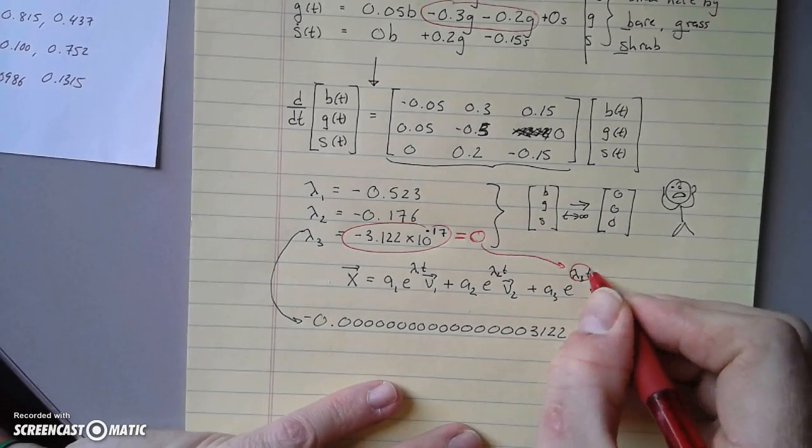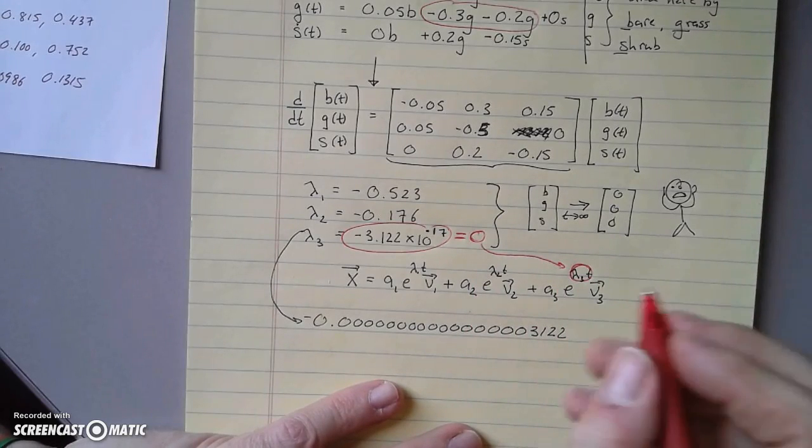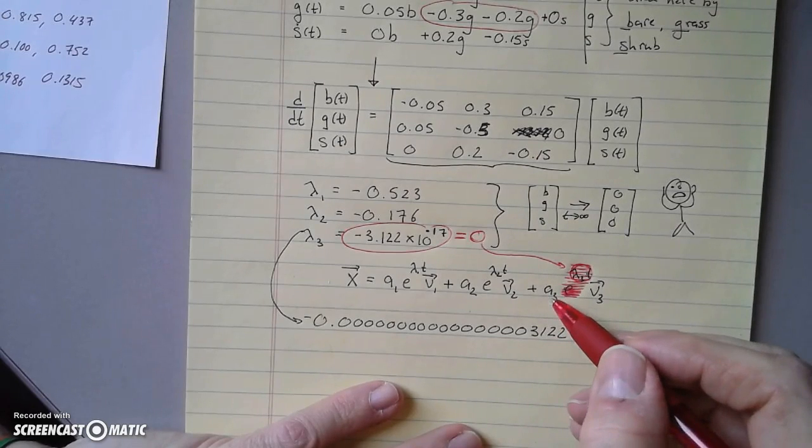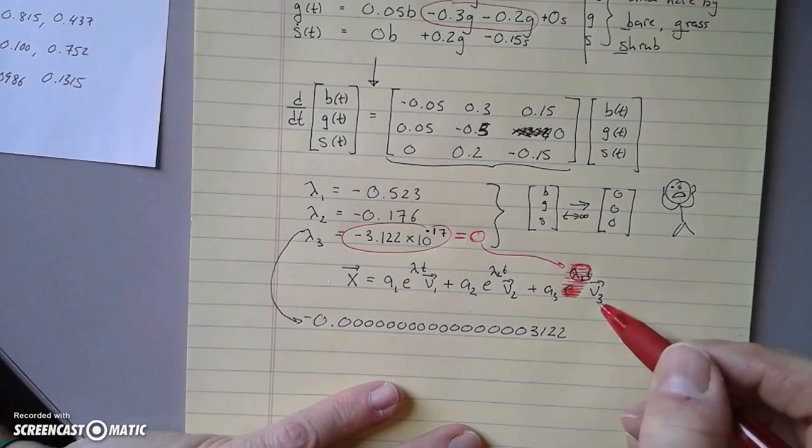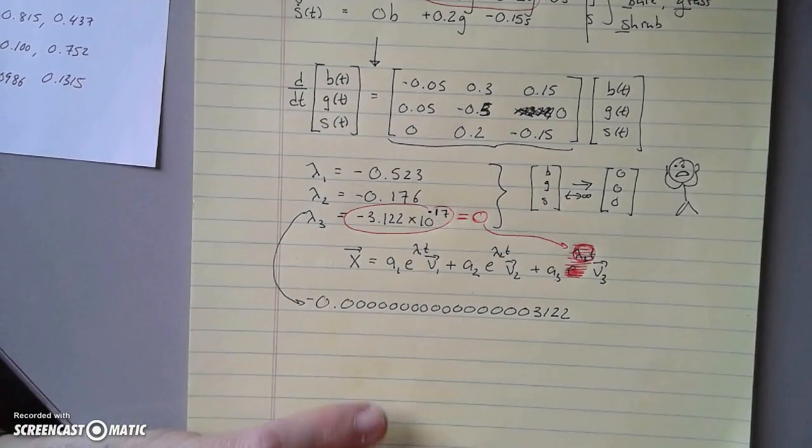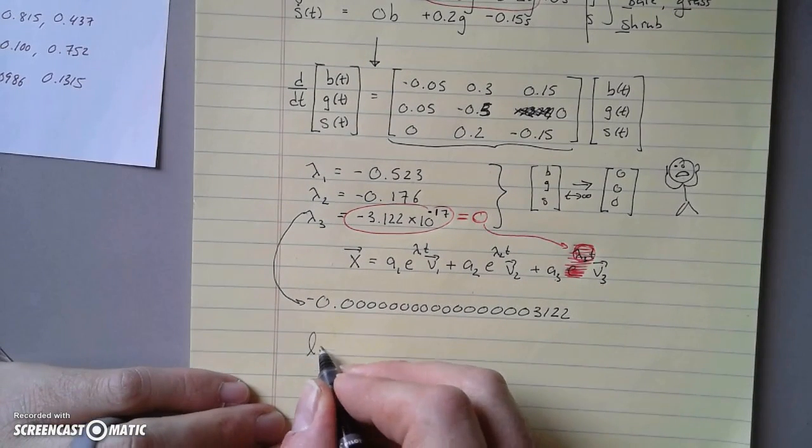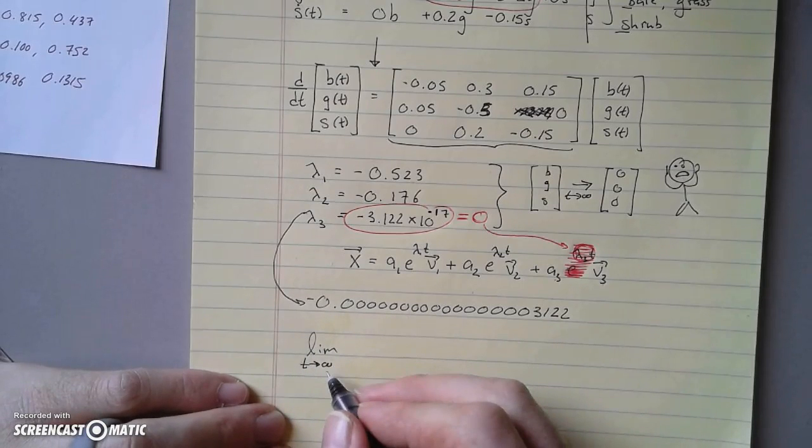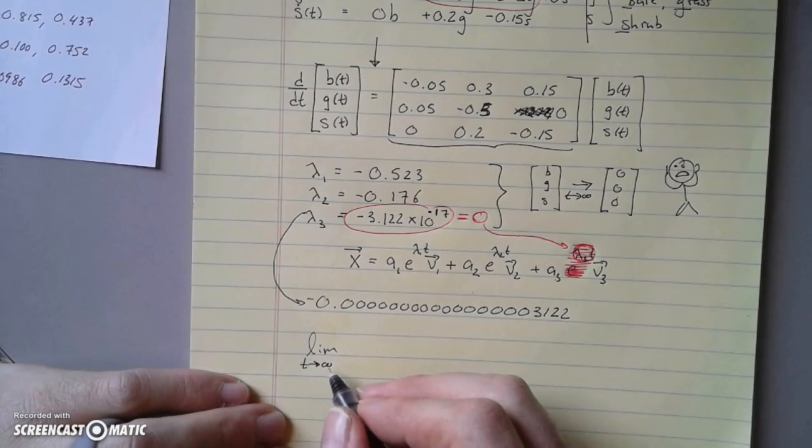What are the consequences now? We have a 0 in one of our exponents in the exponential functions, so it's not even there. Now we have a constant times a vector, so now we can say the limit of our system as t goes to infinity.